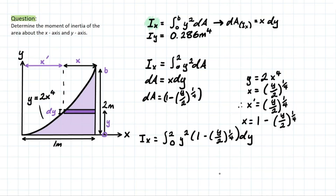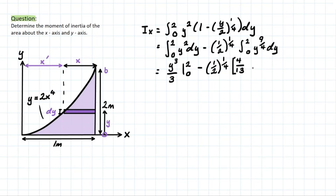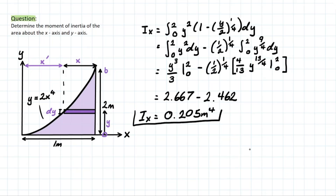After all that integration, we are left with the final answer: ix = 0.205 m⁴. These problems can seem tricky at first, but it's really about understanding what value the function gives you when you plug it in and whether it actually represents dA when you use that substitution method. I hope this video helped clear up that confusion — thanks for watching.